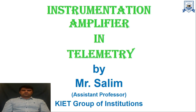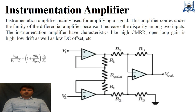The instrumentation amplifier is a kind of differential amplifier which provides high gain, high common mode rejection ratio (CMRR), and high input impedance. It is designed for very specific applications. This amplifier comes under the family of differential amplifiers because it increases the disparity between two inputs.